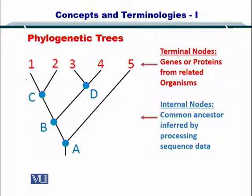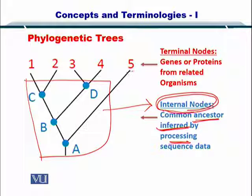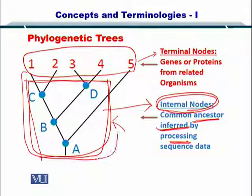Also, here at the bottom are your internal nodes. These are the common ancestors as inferred by processing the sequence data. What is important to understand is the term internal nodes — because the terminal or external nodes are distinct from the internal nodes, and these internal nodes are not shown to the user except in the form of a phylogenetic tree.